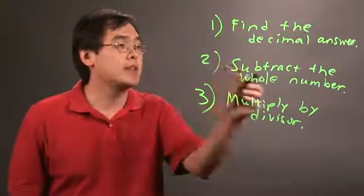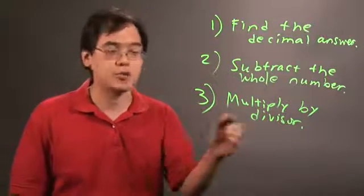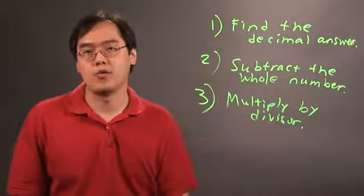So basically, find the decimal answer, subtract out the whole number portion of the solution, and then multiply by the divisor, and that'll be your remainder.